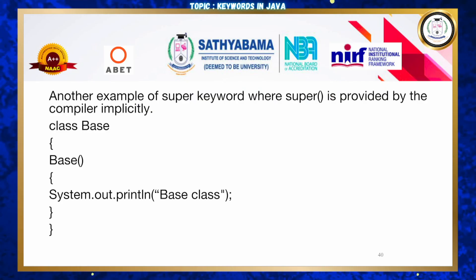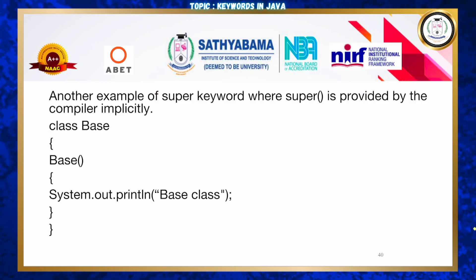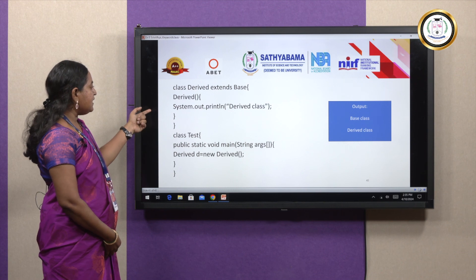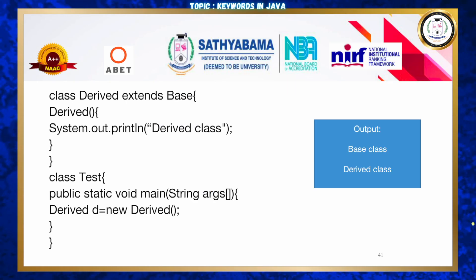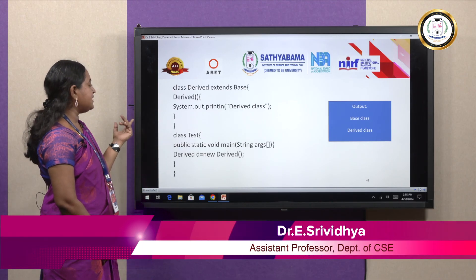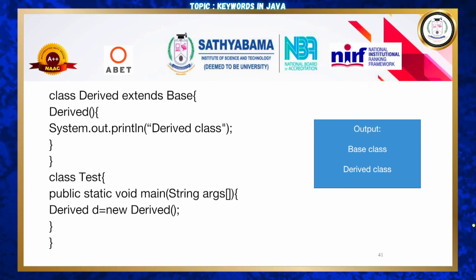One more example: the compiler implicitly adds super() in the derived class constructor. Class Base has a constructor printing a string statement. Class Derived extends Base and also has a constructor printing a string. In the test class, creating 'Derived d = new Derived()' — without explicitly calling super — still accesses both constructors, giving output 'base class' and 'derived class'. Thank you.